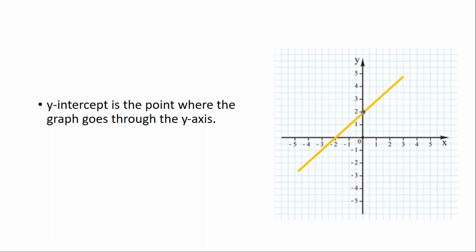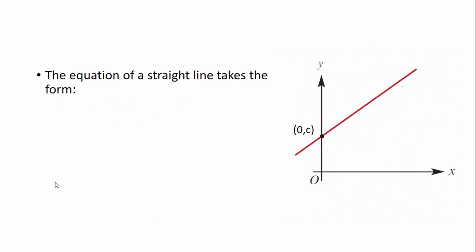The y-intercept for this graph would be (0, 2). As you might guess, the x-intercept would be over here where it goes through the x-axis — that's something we'll learn more about in the future. Now going back to the general form of a straight line: y equals mx plus c.